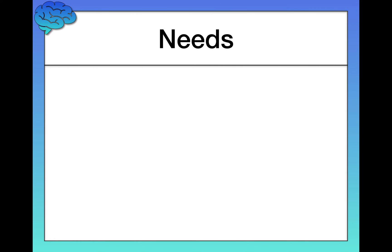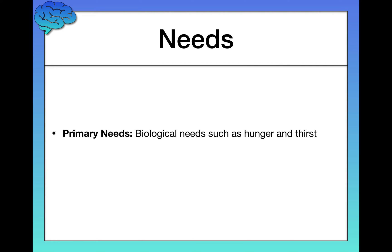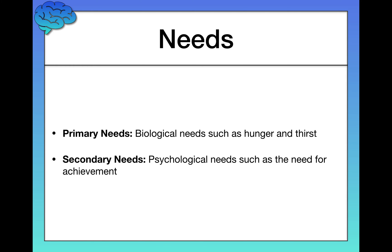As a final point, let's talk about needs — things that motivate and drive us. We differentiate between primary needs, which are biological needs required to keep us alive, such as hunger and thirst. Without these, we would die. Secondary needs, in contrast, are still important but aren't necessarily required for life. Secondary needs are psychological, such as the need for achievement, the need for self-esteem, and the need for love or companionship.